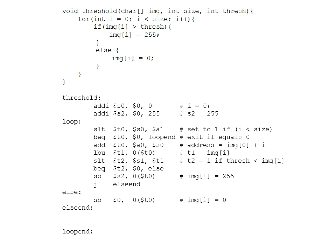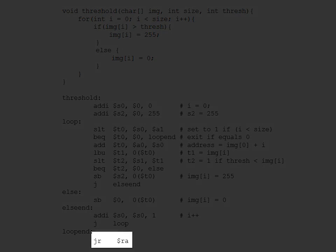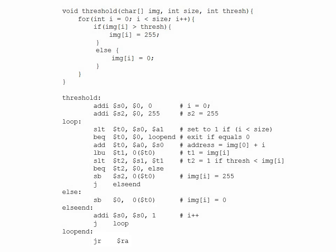The last portion of the loop is the increment of i. After the if-else completes, we add an add-immediate instruction that adds one to the index value stored in s0. Then we add a jump back to the start of the loop. Finally, after the loop ends, we put in a jump-register to the return address register, which returns execution to the caller and completes the translation of the C code into MIPS assembly.